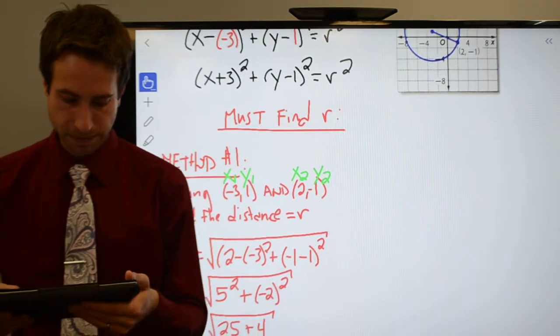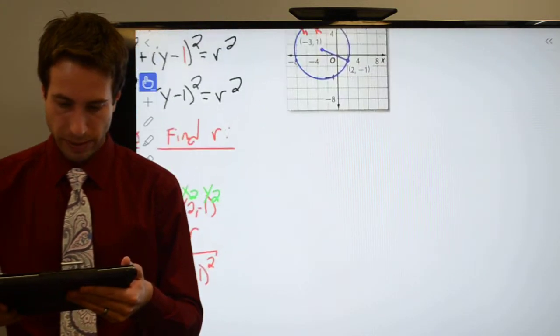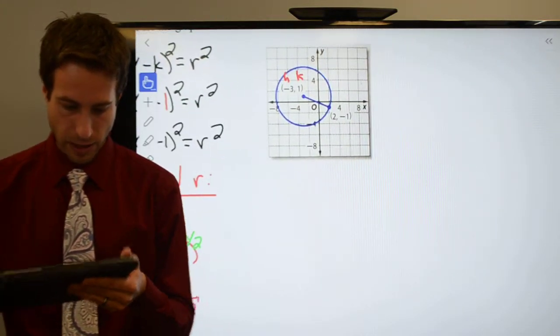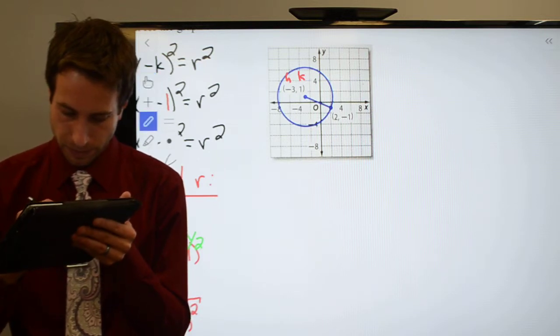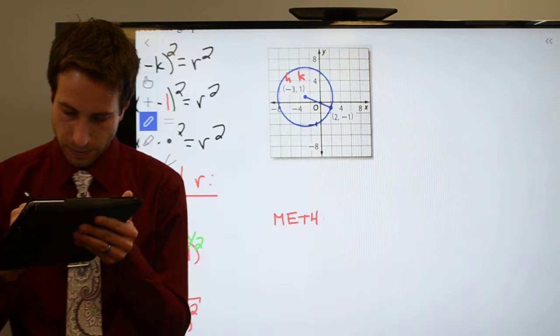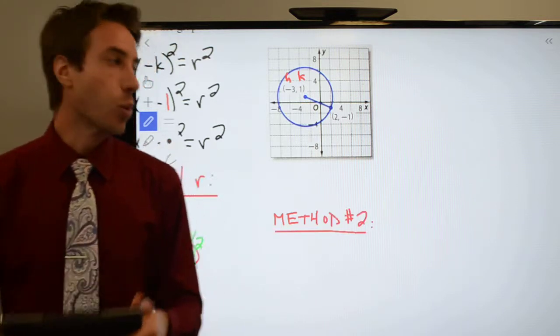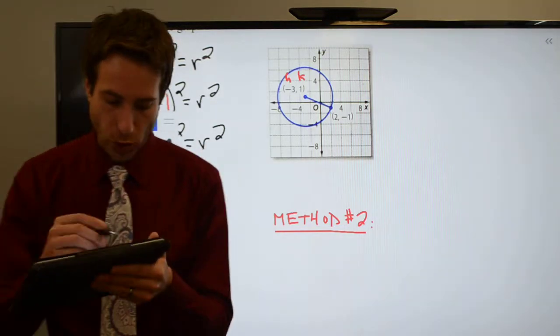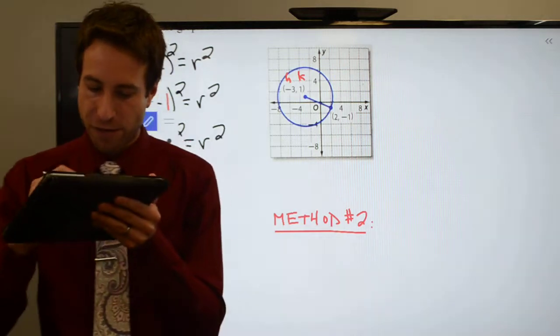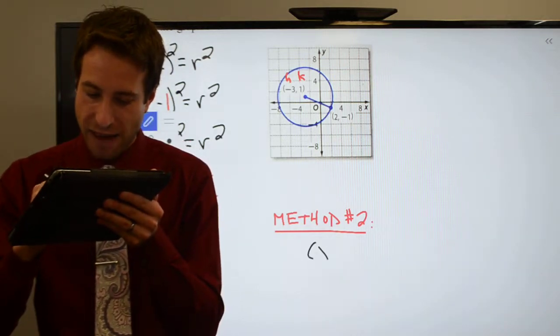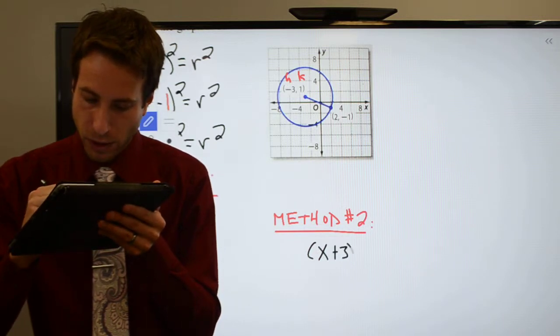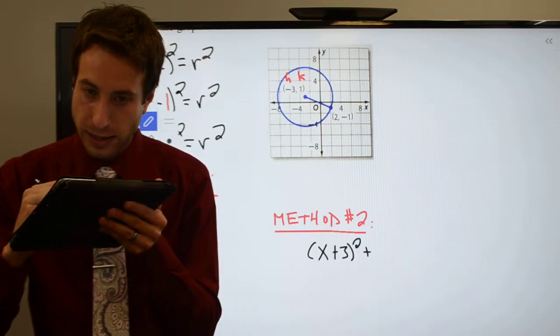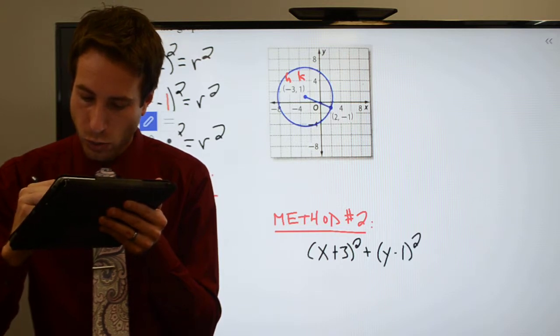Let me show you the second method. Let me slide over here a little bit. There we go. Method number 2. Okay, here's what we've got. For this second method, please notice what I did is I already wrote this equation, right? So, so far, here's what I've got for this parabola. I have this.